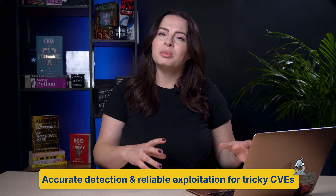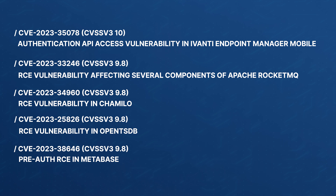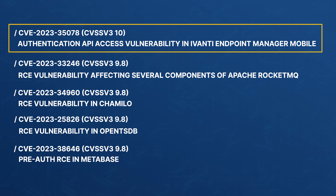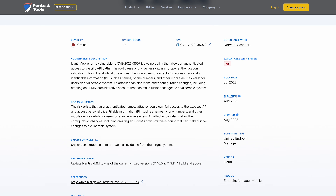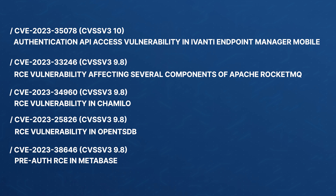We've introduced accurate detection and reliable exploitation modules for a couple of new, very complex, high-risk CVEs. Our security research team thrives on challenges, so they stepped in to crack the code on these vulnerabilities. One of them is the authentication API access vulnerability in Ivanti Endpoint Manager Mobile, which has a CVSS v3 score of 10 — the maximum. We also have a couple of RCEs that you can both detect with the network scanner and exploit with Sniper Auto Exploiter, which packs over 110 custom exploitation modules.